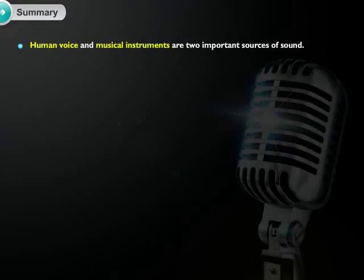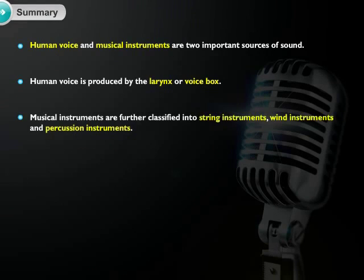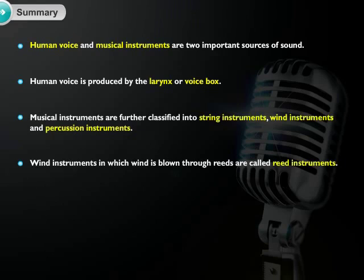Human voice and musical instruments are two important sources of sound. Human voice is produced by the larynx or voice box. Musical instruments are further classified into string instruments, wind instruments, and percussion instruments. Wind instruments in which wind is blown through reeds are called reed instruments.